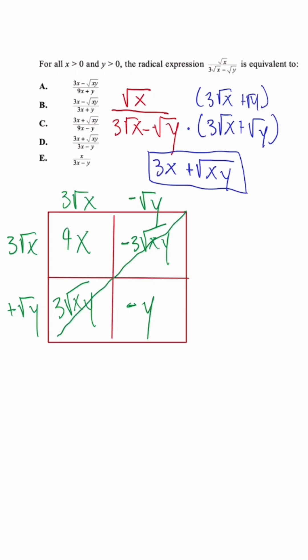So because this is a difference of squares, the middle term cancels out. The denominator is going to be 9x minus y.